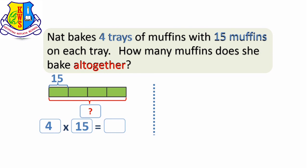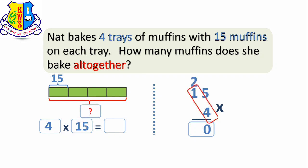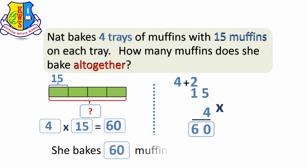Multiply vertically: 15 times 4 is equal to blank. 5 multiplied by 4 makes 20. Regroup — bring down 0, carry 2. 1 times 4 makes 4, plus 2 makes 6. The answer is 60. She bakes 60 muffins all together.